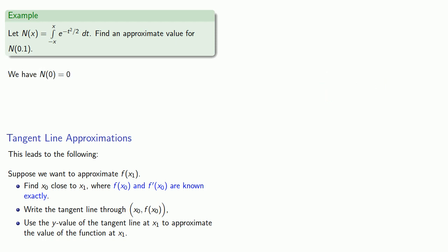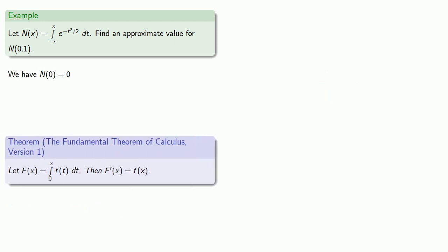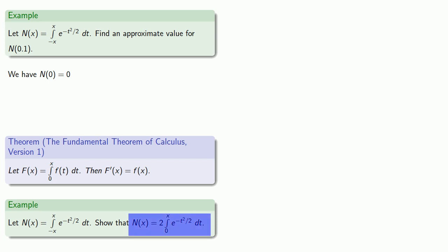What about n prime of 0? The fundamental theorem of calculus tells us something about the derivative of a function defined as an integral from 0. Unfortunately, this function is defined from minus x. Fortunately, we showed that this could be written as a function defined from 0. So we can apply the fundamental theorem of calculus to find the derivative.